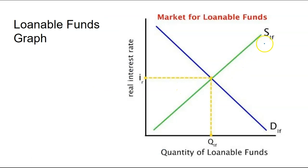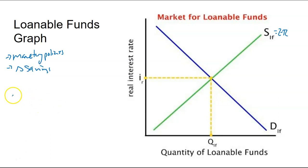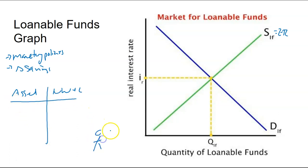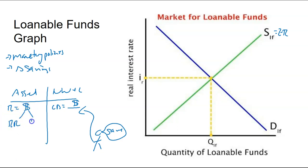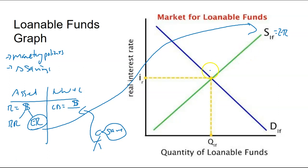For the loanable funds graph, the supply is excess reserves. What can change the supply? Anything that changes the excess reserves — typically monetary policies. But it could also be changes in savings. If somebody says they want to save more money and they put their money into a bank, that bank now has some amount of money with required reserves and excess reserves. So savings can also change the supply of loanable funds.